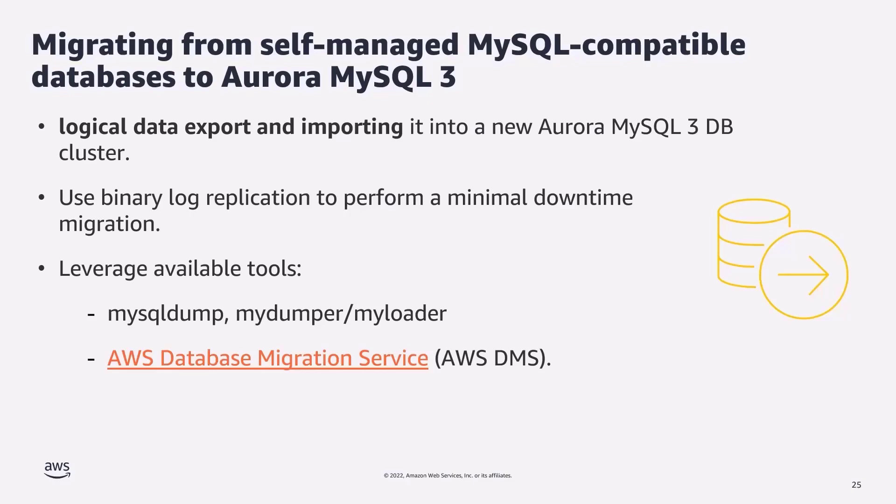To migrate from self-managed MySQL instances — whether on premises or on EC2 — there are two main recommended approaches. One is a logical dump and restore using native MySQL tools such as mysqldump, or community tools like MyDumper/MyLoader, which is more suitable for larger datasets using parallel threads. You can use binary log replication between source and target to minimize downtime. Another way is to use AWS Database Migration Service (DMS), which can perform both full load and change data capture between source and target.